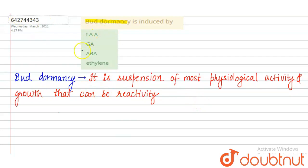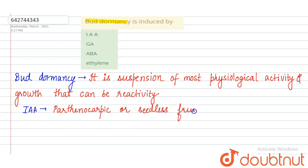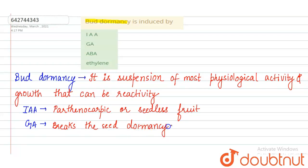The first option was indole acetic acid, which is a natural auxin. Indole acetic acid induces parthenocarpic growth — the development of seedless fruits. The next option was gibberellin acid. Gibberellin acid breaks seed dormancy and promotes seed germination.